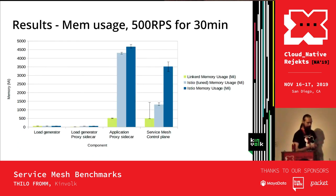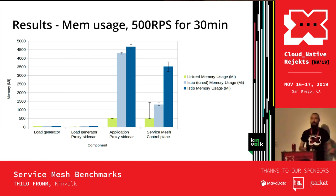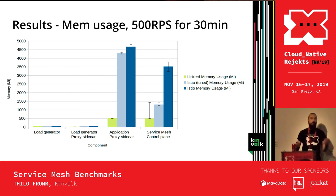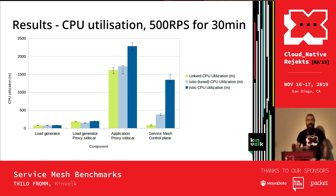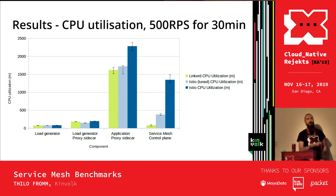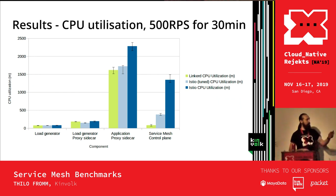For resource usage, we have a clear winner with Linkerd in terms of memory usage. The tuned version of Istio takes significantly more memory, though that's not as bad as it looks — Istio comes loaded with a huge number of features that consume resources. For CPU utilization, Linkerd and Istio are comparable head-to-head on the application proxy sidecar. The sidecar is where it really matters since that's the actual traffic being processed. The control plane also uses some resources but I wouldn't put too much weight on that.